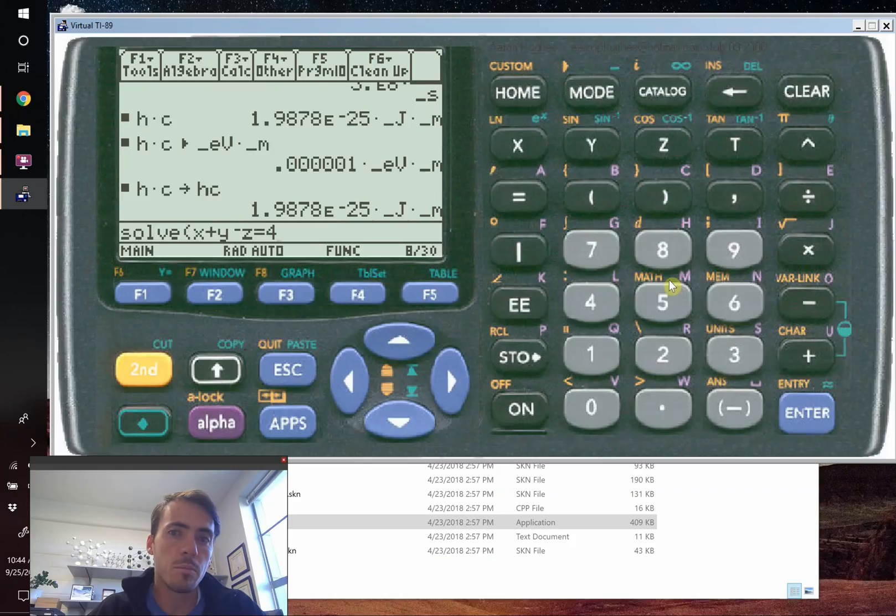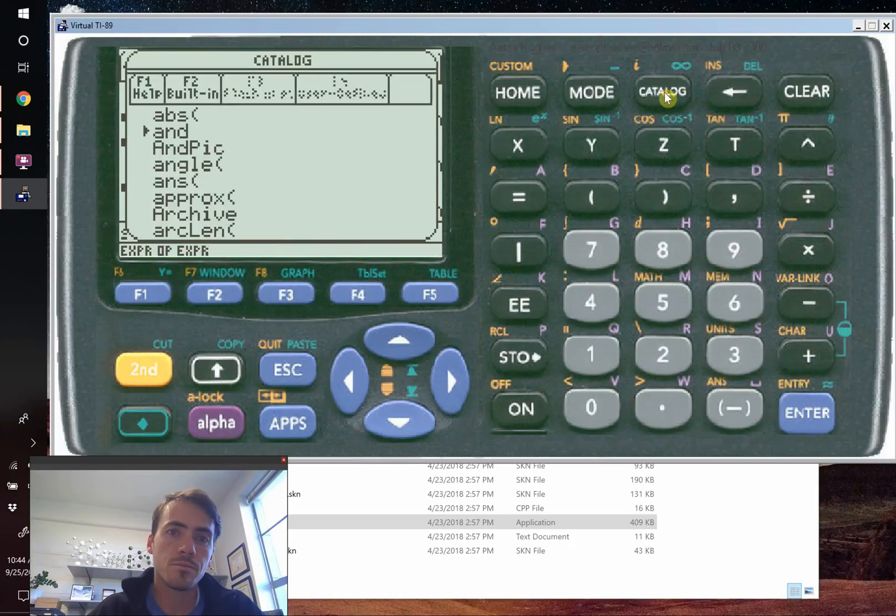Now you have to use a very special command here. You're going to go up to catalog, and you have to use the AND button here. You can't type out AND for some reason. It's not the same. It interprets it as variables rather than a command. So hit AND.